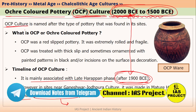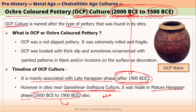OCP culture is the culture of the people at sites where we have found Ochre Coloured Pottery. Wherever we have found Ochre Coloured Pottery in this time period, we associated more things with it and said all these people belong to Ochre Coloured Pottery culture. Ochre is basically a type of red colour.